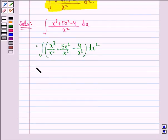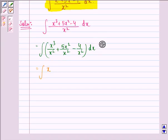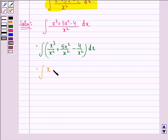Now this can be separated and written as: integral of x dx plus 5 times the integral of dx minus 4 times the integral of 1/x² dx.